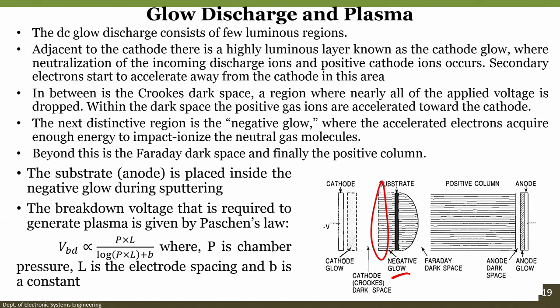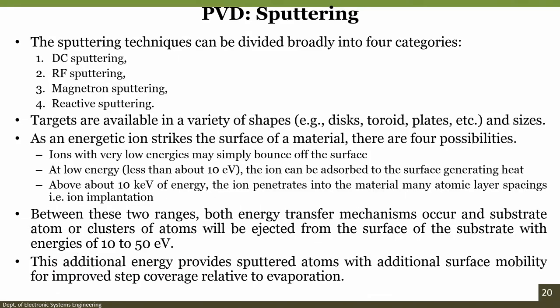In the negative glow region, accelerated electrons have enough energy to ionize neutral gas molecules. Beyond this is the Faraday dark space and then the positive column. The substrate is placed in the negative glow during sputtering. The breakdown voltage follows Paschen's law: V = f(P·L), where P is chamber pressure, L is electrode spacing, and B is a constant.